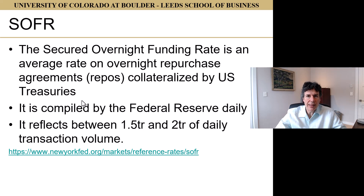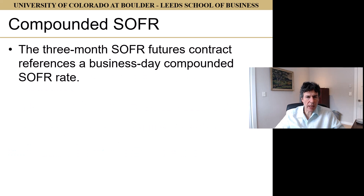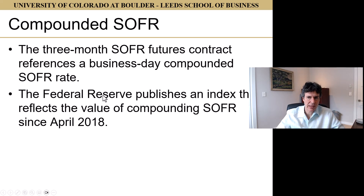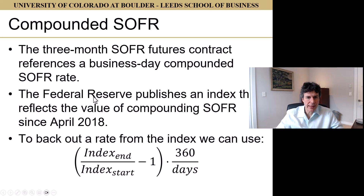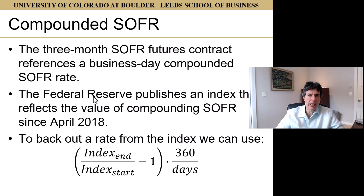The futures contract is not on SOFR itself. SOFR is an overnight rate; the futures contract is on a three-month compounded rate. Compounded SOFR is a three-month rate compounded on business days. The Federal Reserve publishes an index reflecting compounded SOFR since April 2018. To back out a rate from that index, we take the index at the end divided by the index at the start — how much a dollar has grown — minus one, times 360 over days. That gives an annualized actual-over-360 rate.